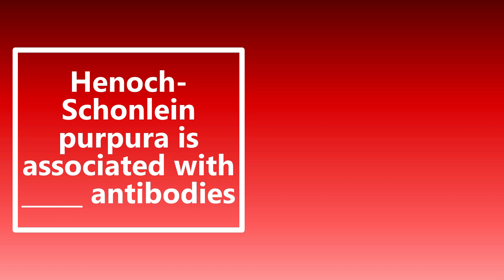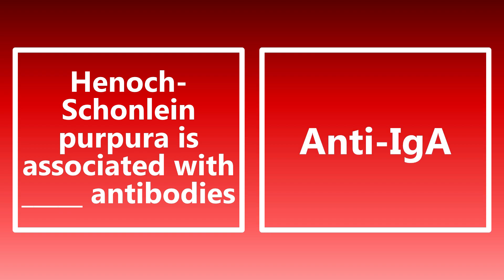Henoch-Schönlein purpura is associated with anti-IgA antibodies. One of the newer names for Henoch-Schönlein purpura is IgA vasculitis, so you want to know it by both names and know the association with anti-IgA antibodies.